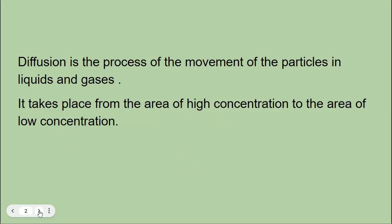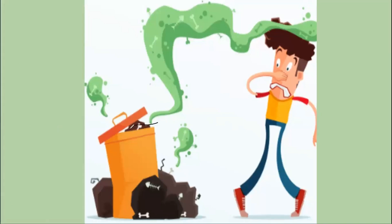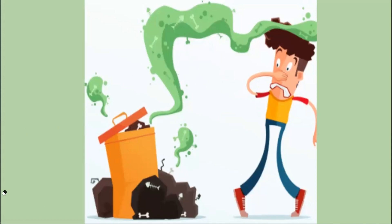A very common example: when you walk past a garbage site, you can feel the smell of the garbage. The chemicals coming out of the garbage are diffusing from the area where they are more — inside the garbage — to the area where they are less. They fill up the entire surface, and eventually they touch the receptor cells in your nose and you can feel the bad smell. This is one example of diffusion.